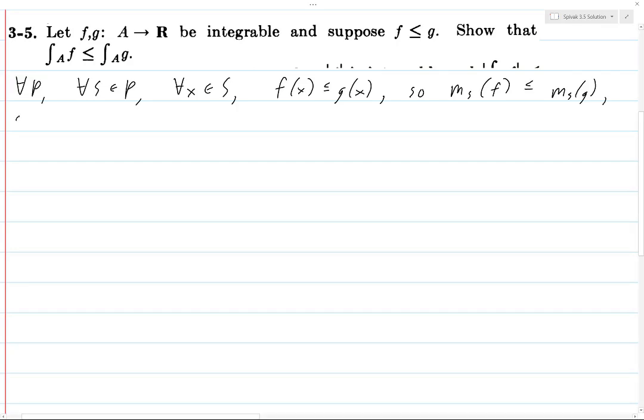And now we take the sum over all S in P, and we end up with L of F,P is less than or equal to L of G,P.